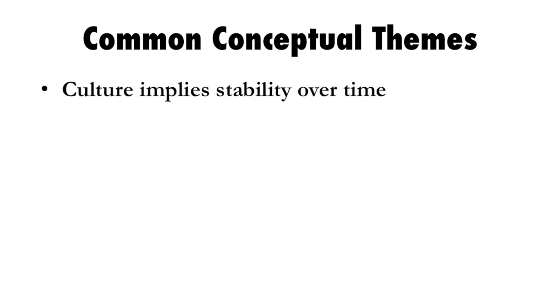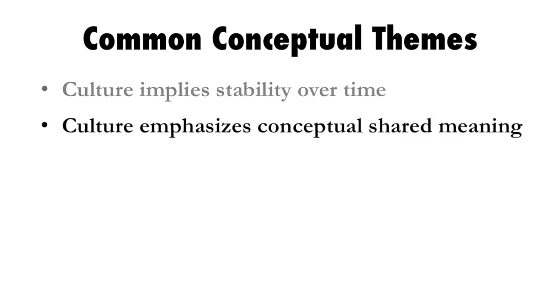Let's turn to the common conceptual themes about culture in the article. Schein talks about how culture implies stability over time — this is not something that happens in a flash; culture is a lasting part of organizational life. Culture also emphasizes conceptual shared meaning. It's not just about behaviors, but about how people think, feel, and process things as a group — if you're part of a culture, you probably see things relatively the same way as others because you share a common meaning.